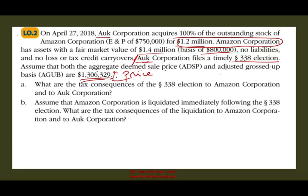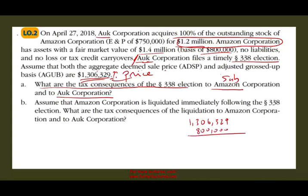Now let's ask the first question: what are the tax consequences of Section 338 to Amazon (the sub) and to A (the parent)? Amazon is the sub. Amazon deemed sold the assets for 1,306,329 and they have an adjusted basis in the assets of 800,000. So they have a gain of 506,329. They have to pay 21% based on the new tax rate on that gain, resulting in taxes of 106,329. That's the tax consequence for Amazon, the sub.